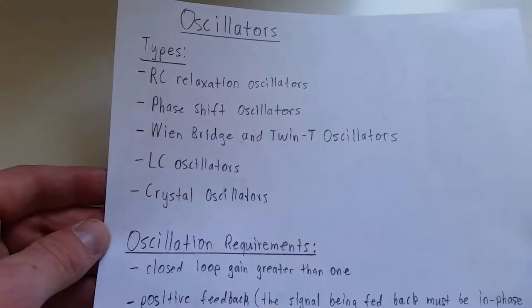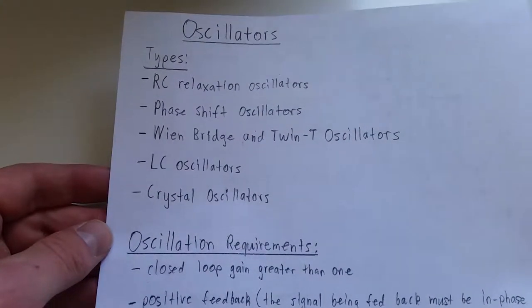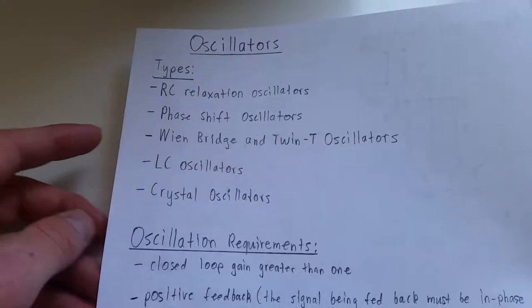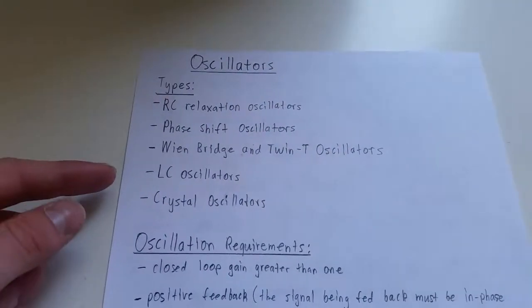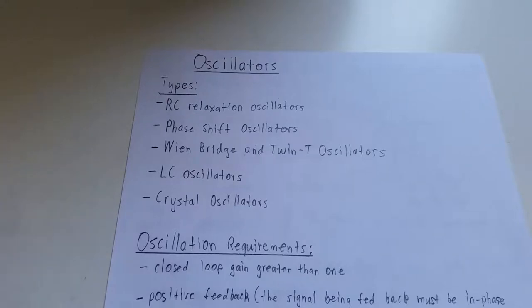Oscillators. The main types are RC relaxation oscillators, phase shift oscillators, Wien bridge and Twin T oscillators, which are technically different but use the same concept so they're lumped together, LC oscillators, and crystal oscillators.